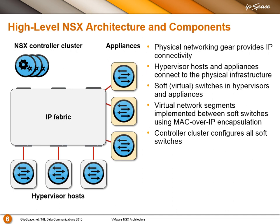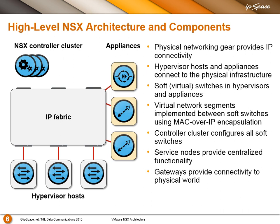The controller cluster has a minimum of 3 nodes and currently the supported maximum is 5 nodes. The appliances come in different flavors — NSX needs a few service nodes to provide some centralized functionality, and then there are the gateways to the physical world.